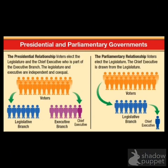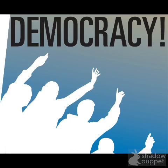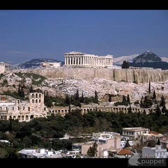That brings us to our next example, which is democracies and republics, where leaders are elected. In a democracy, government power comes from the will of the people — the people decide, either directly or indirectly, what's going to happen. Probably the earliest example of democracy is 5th century Athens, where the word democracy comes from, which basically means rule by the people.